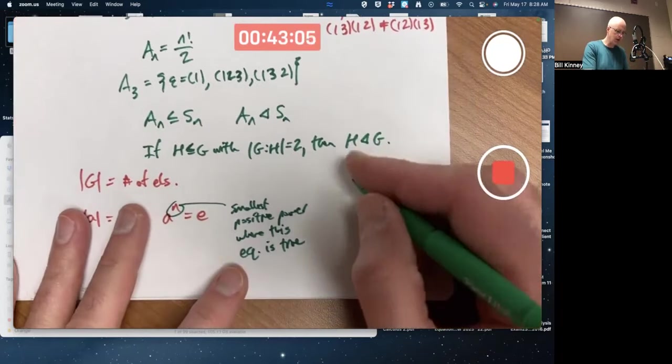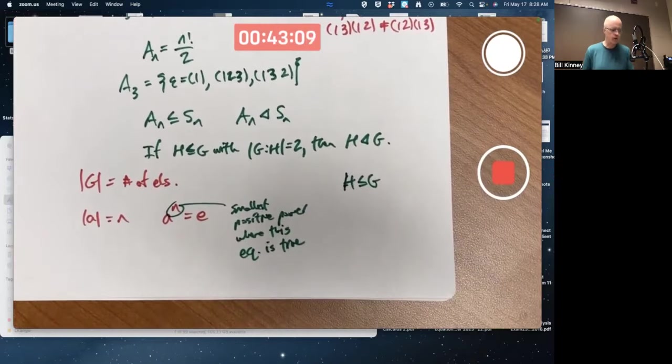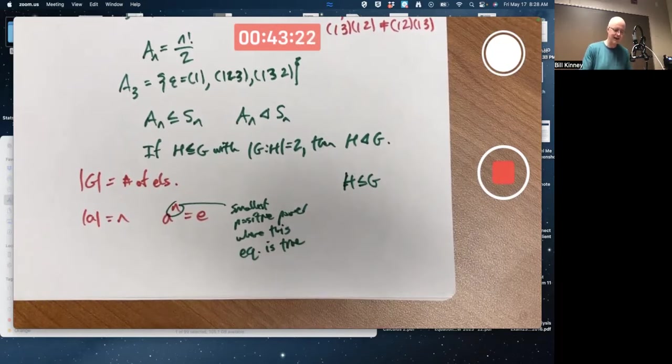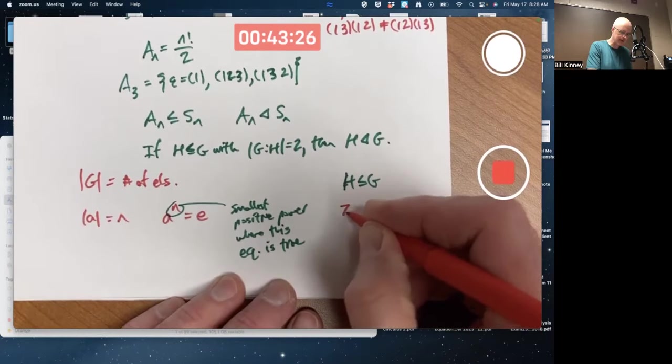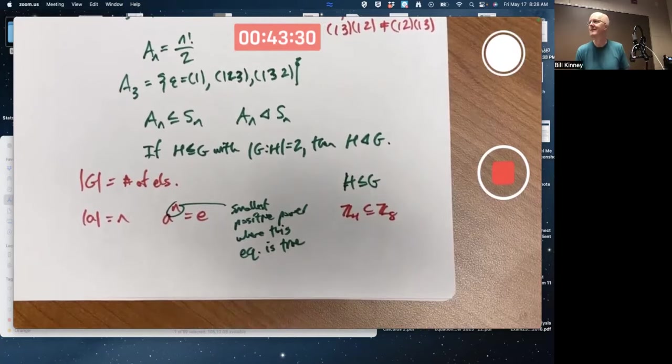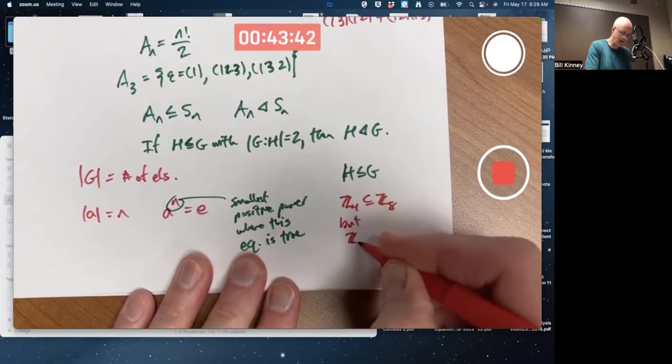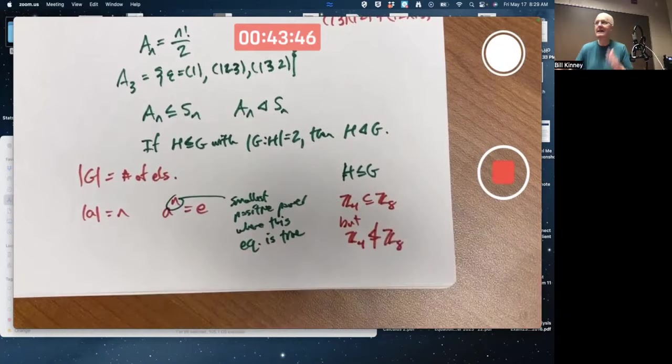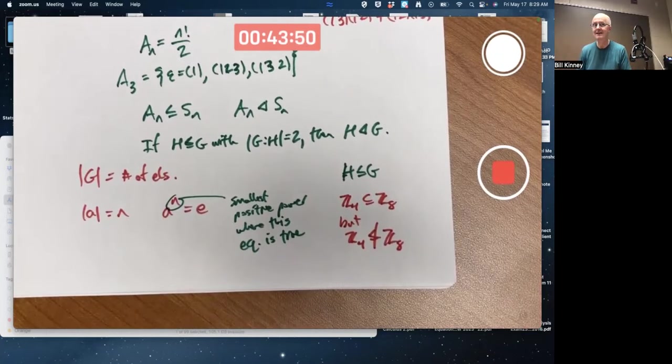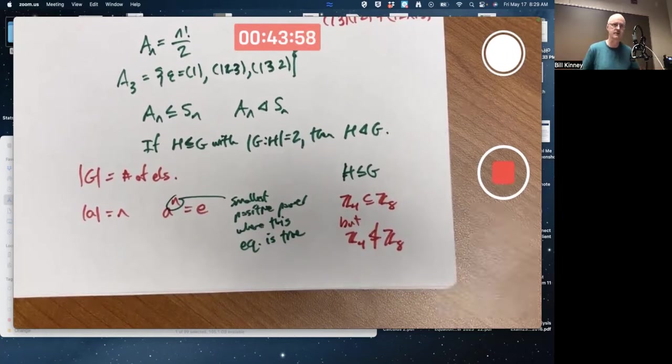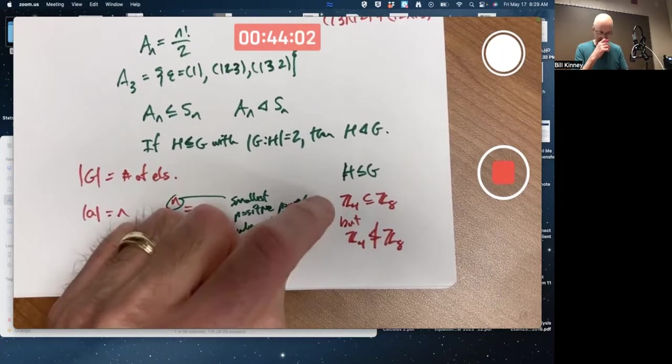It doesn't mean, if this is true, that the order is n. n has got to be the smallest positive power of a, bringing you back to the identity, for the order of a to be n. These are not equivalent to each other. That's the smallest positive power where this equation is true. And we did lots of examples just to try to understand these concepts, where you were computing groups, computing Cayley tables, to help you compute orders of elements to understand these definitions. And we all had the idea of what is a subgroup. Real quickly, a subgroup is a subset. First of all, that is itself a group under the exact same operation.